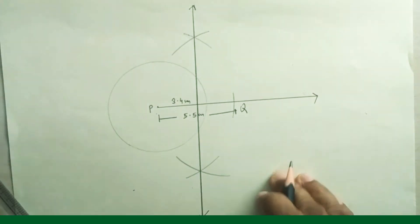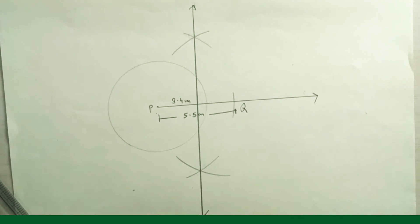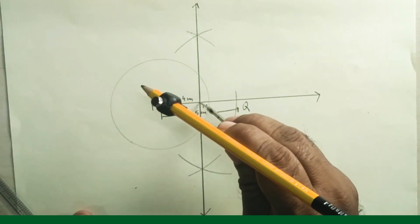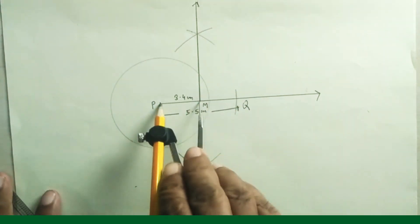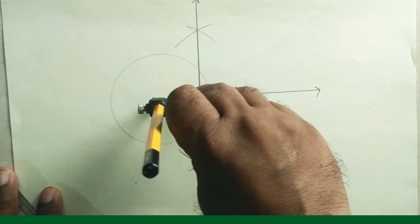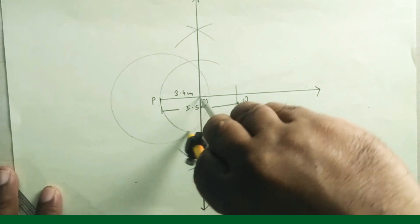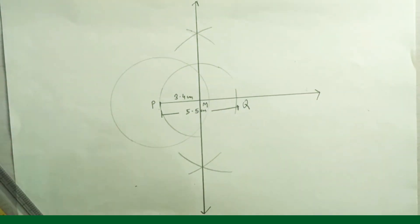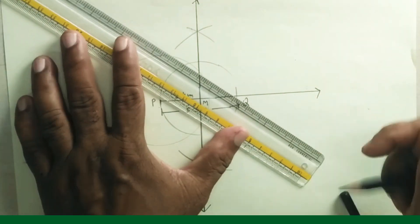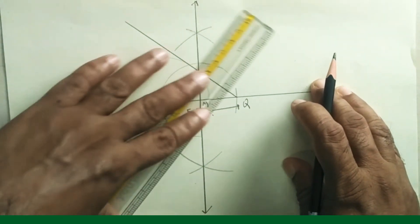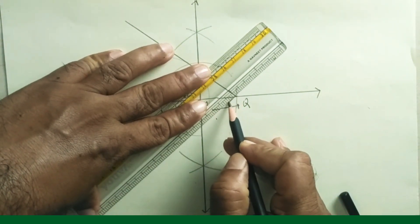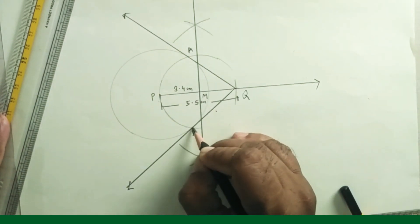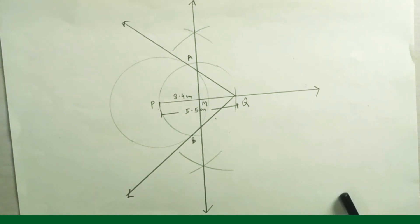Keep the pointer at point M where the perpendicular bisector intersects PQ, take distance equal to PM, and draw arcs which will intersect the circle at two points. From those points draw the tangents passing through point Q. Name these points A and B — tangent segments AQ and BQ. This is how we construct tangents when the point is outside the circle.